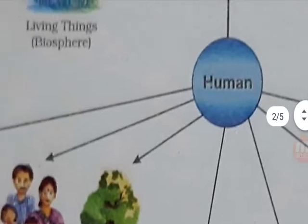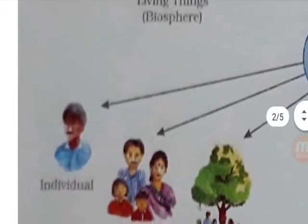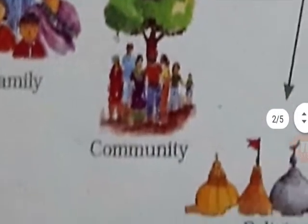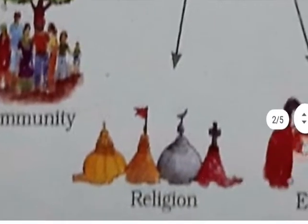Question 5 (Human components): Individual, family, community, religion, educational, economic, and political situations are all examples of human components of environment.